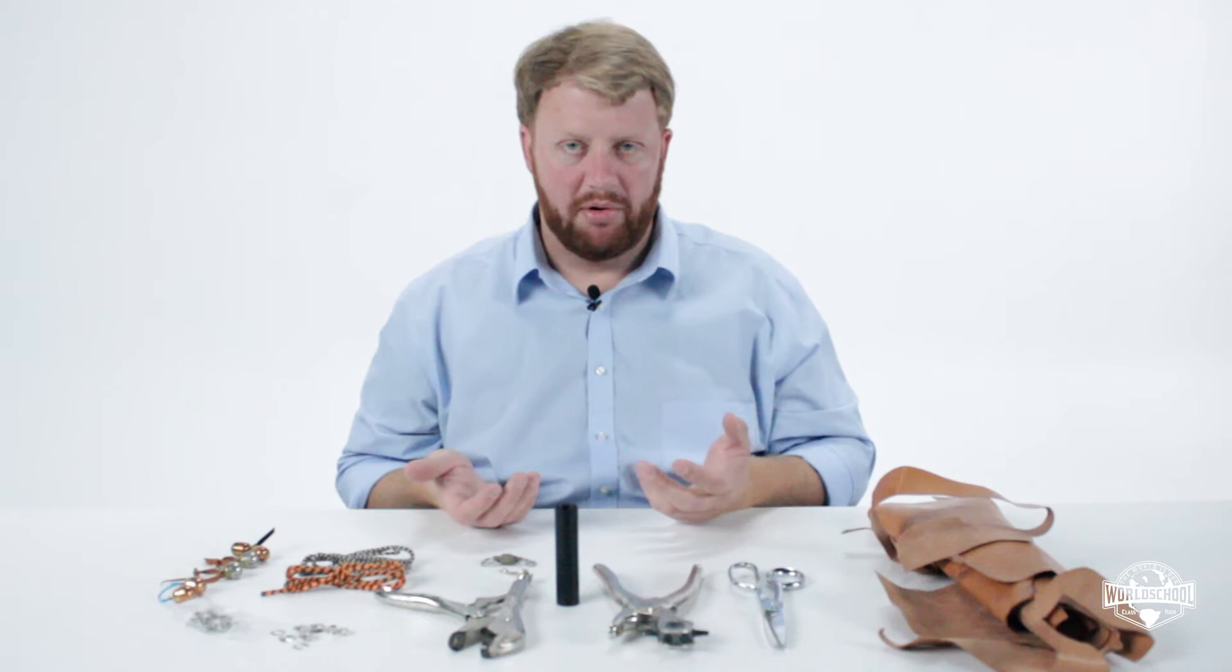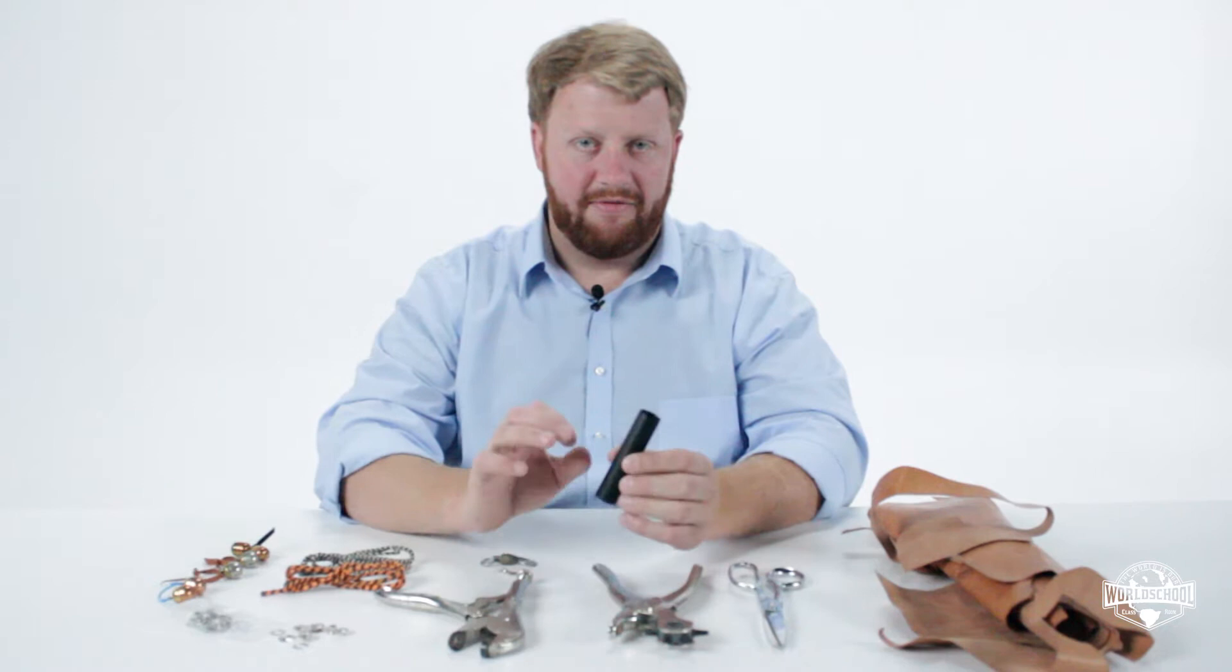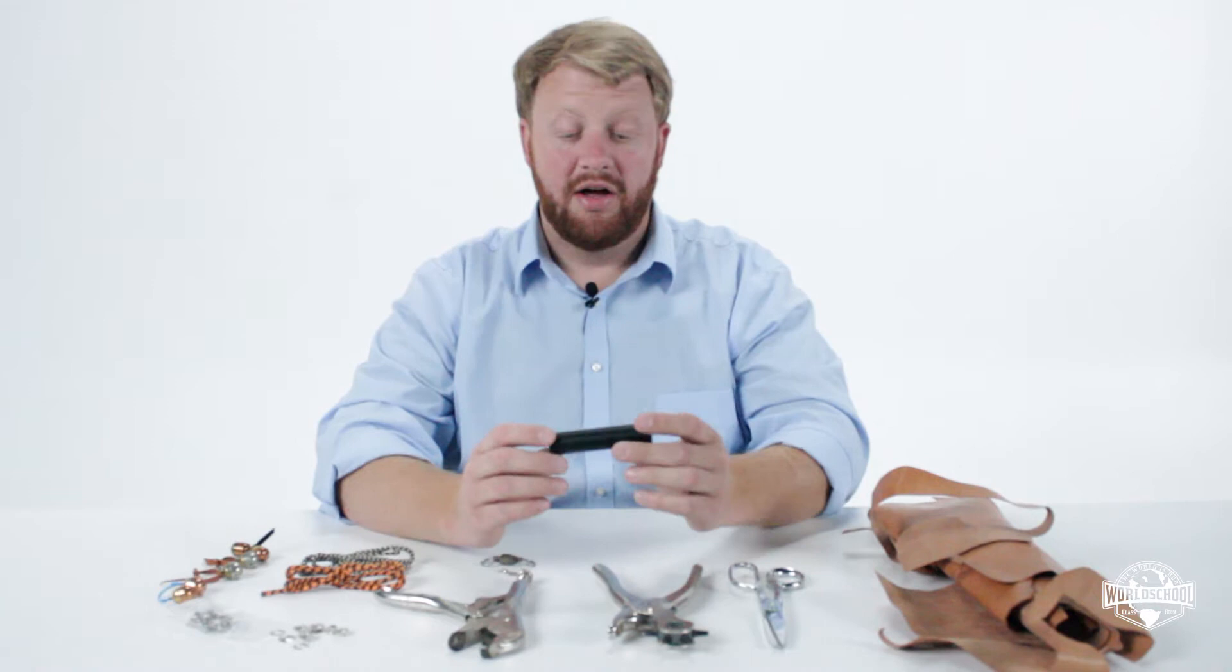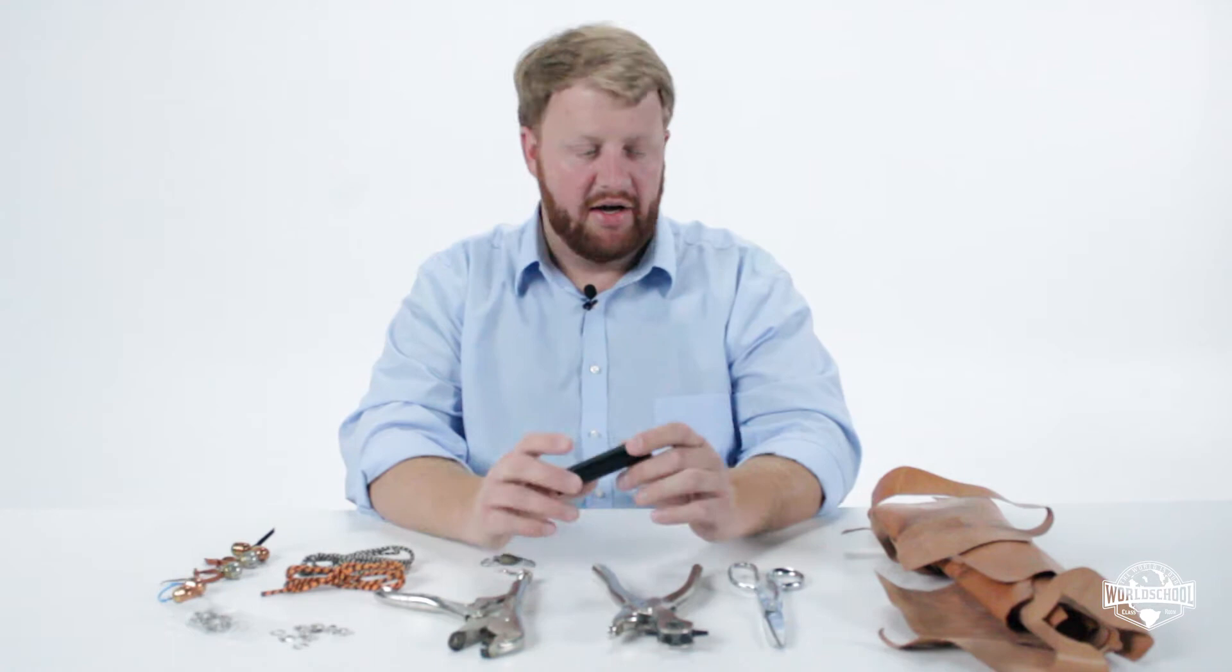The first thing that we have on is what are called Jesses. This is going to represent a bird's leg. Now this is bigger than a bird's leg. Birds have very thin legs. There's no muscle on the part of the leg that we're dealing with. It's basically just bone and tendon and skin and heavily armored scales. This is about as big around as an eagle's leg, but we're going to pretend it's something smaller like a hawk.